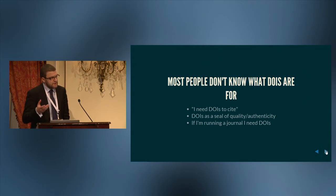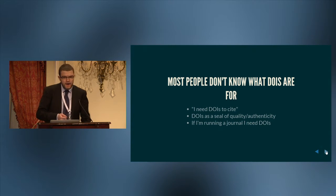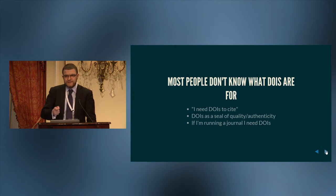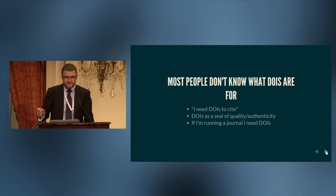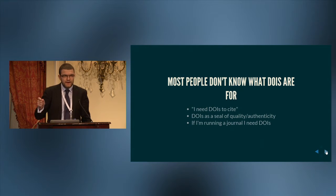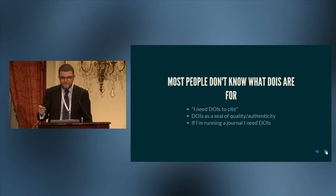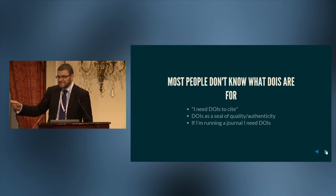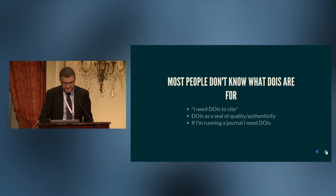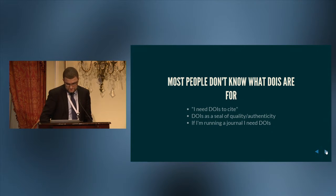The first kind of question that scholar publishers come up with is: I need to get DOIs, how do I do that? It's not 'I need a system for persistent linking and preservation.' It's 'how do we get DOIs? Because that's how we recognize a quality publication.' So they're coming at it from a very different and perhaps wrong angle.